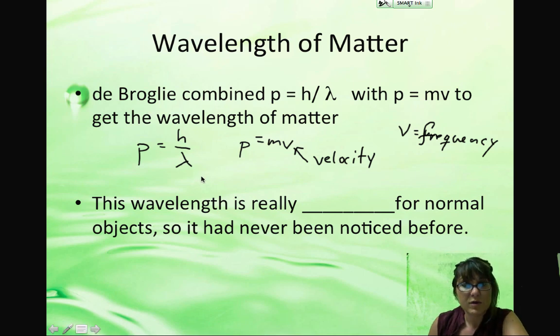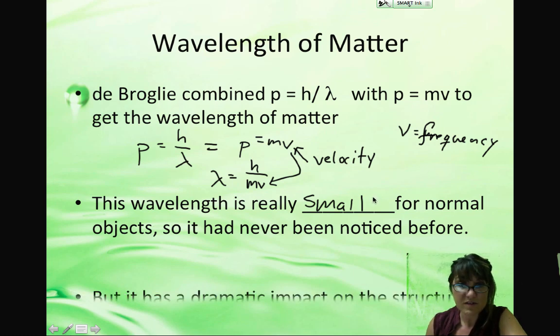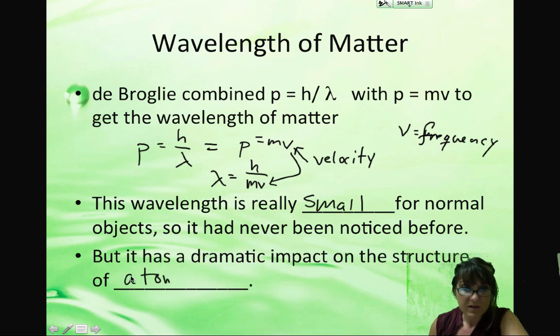So when de Broglie combined these two equations, what he found is that the wavelength of any object, any particle of matter, can be related to Planck's constant divided by its mass times velocity, its momentum essentially, because they're the same. These two both measure momentum. So he put the equations together. The wavelength is really small for most normal objects, so it had never even been noticed before, because you can't measure a wavelength that is too small for us to detect. But it has a very dramatic impact on the structure of the atom, because an atom is also really small.